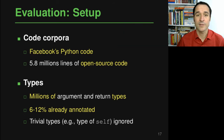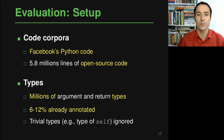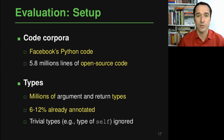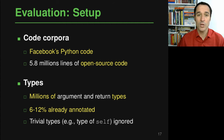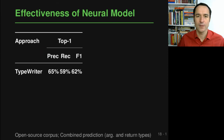We evaluate TypeWriter on two code corpora: all Python code at Facebook (many millions of lines) and an open-source corpus of almost six million lines. In this code there are millions of places where type annotations could be added; we focus on argument types and return types of functions. Between six and twelve percent of those are already annotated, which we use to train the neural model.